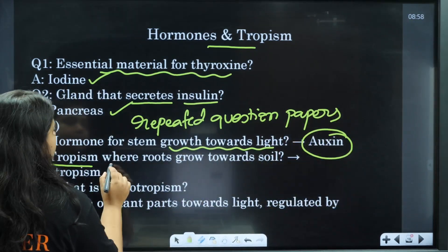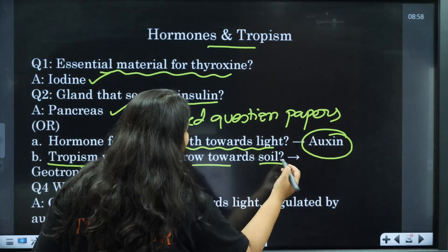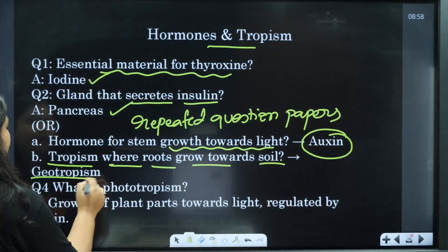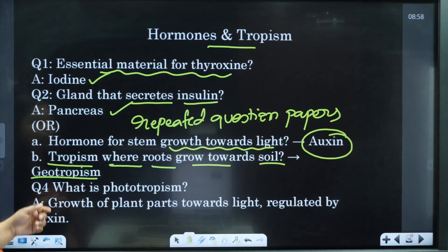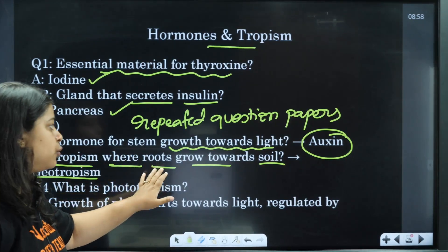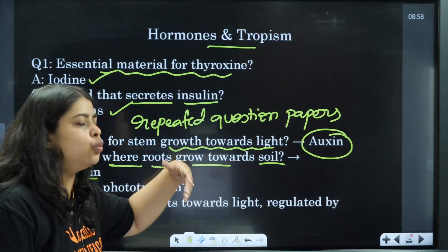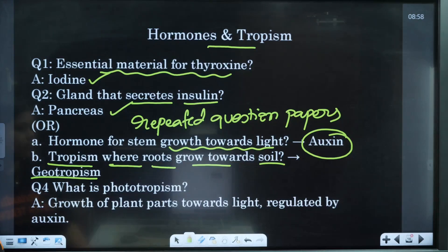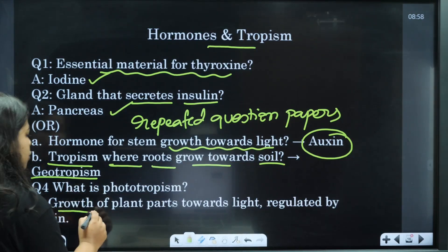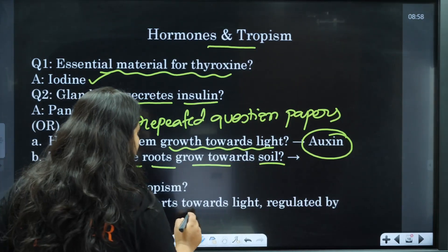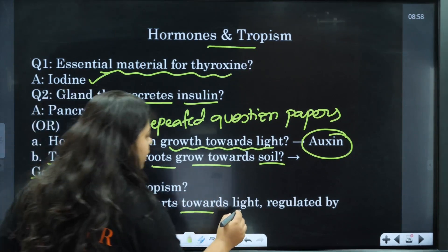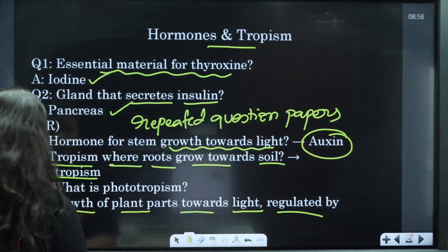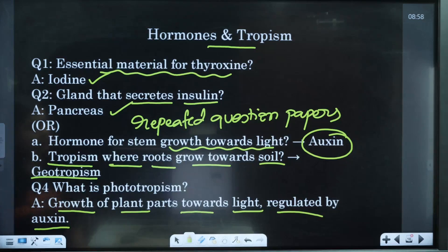The tropism where roots grow towards the soil is called geotropism. What is phototropism? Phototropism is the growth of plant parts towards light, regulated by auxin. This is what you can write down.